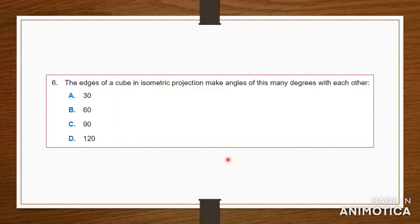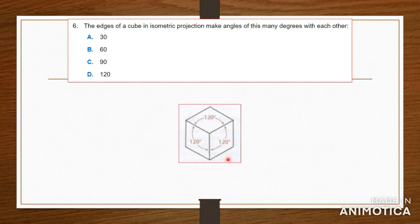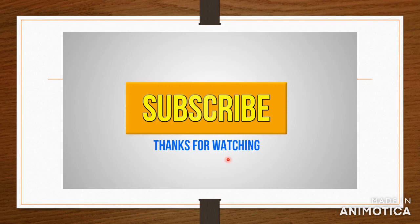Number six: the edge of a cube in isometric projection makes angles of how many degrees with each other? Remember in isometric the angles are equal on all axes. So if it's 60 on each side, those two would add up to 120 on each side. The answer would be 120 degrees between each axis.